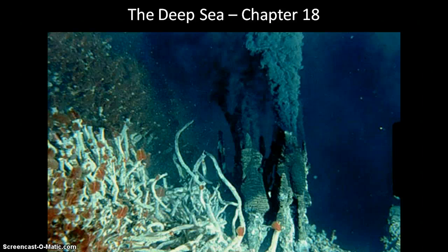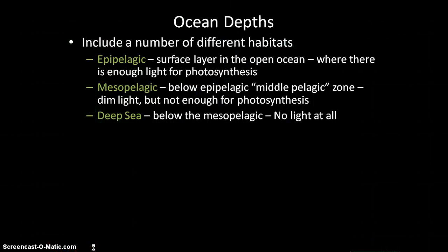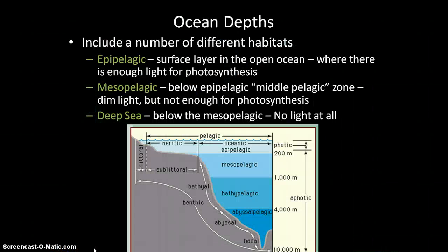We are in chapter 18, the deep sea. We just finished talking about the epipelagic zone, which is the surface layer of the ocean, going from the surface to about 200 meters. Below that is the mesopelagic zone, from about 200 meters to 1,000 meters. And after the mesopelagic zone, from 1,000 meters all the way down to the bottom, we consider that to be the deep sea.